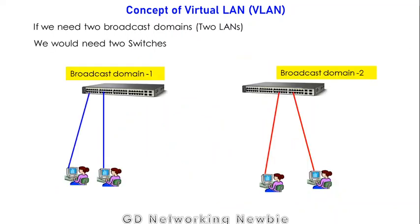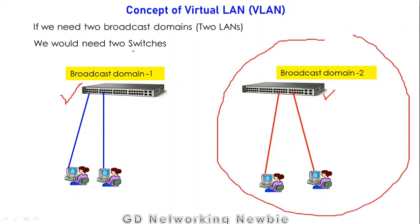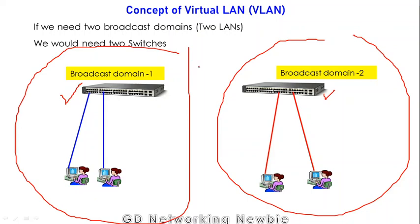Now suppose a need arises to create two broadcast domains — which means we need to create two local area networks. Since every switch creates one broadcast domain, we would need two switches to create two local area networks. One switch forms one broadcast domain, the second switch forms another, and as a result we have two broadcast domains and two local area networks.